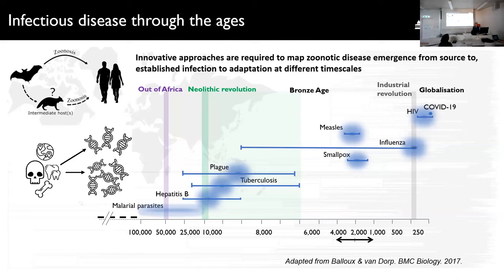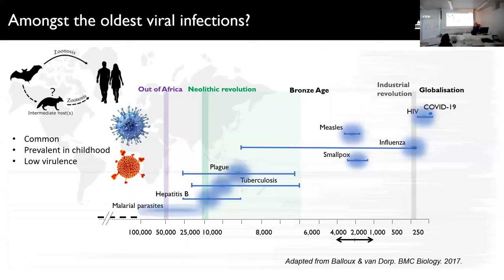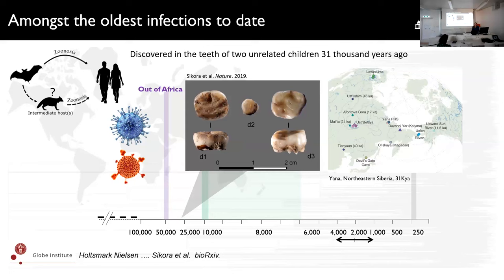Some of the oldest and most interesting viral infections are found among the family of double-stranded DNA viruses. Adenovirus and herpes virus are very common, very prevalent in childhood, and typically have reasonably low virulence. For some like herpes virus, that low virulence manifests as latent infections, with the virus evolving alongside the host over many thousands of years. This has led some to speculate that these viruses have co-existed and co-diverged with humans as a species. I was involved in a project where we were able to identify some of the oldest infections to date within this viral family.